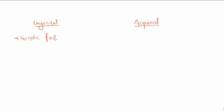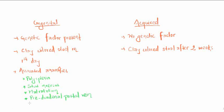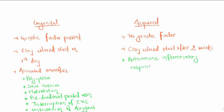Congenital and acquired types. Genetic factor is present in congenital, no genetic factor in acquired type. Clay-colored stool on first day versus after two weeks. Associated anomalies include polysplenia, situs inversus, malrotation, pre-duodenal portal vein, interruption of inferior vena cava, and continuation with azygos vein. Acquired type is caused by autoimmune inflammatory response due to viral infection.